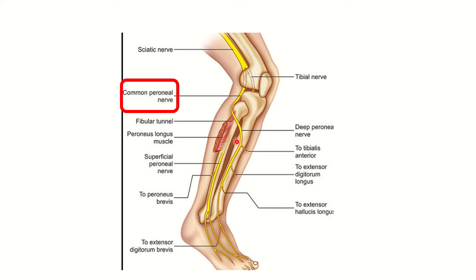In the case of the common peroneal nerve, it bends around the neck of the fibula. During flexion or semi-flexion of the knee joint, this nerve may be compressed against the bone. After rounding the neck of the fibula, the common peroneal nerve divides into two parts: the deep peroneal nerve and the superficial peroneal nerve. This nerve diagram is very important.